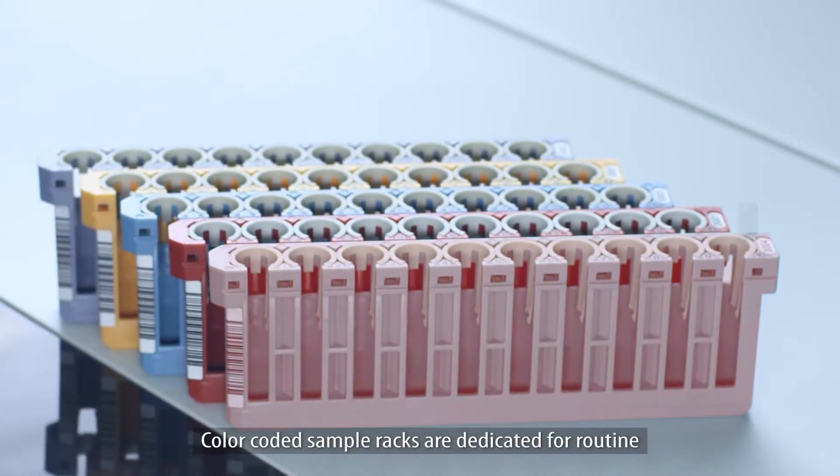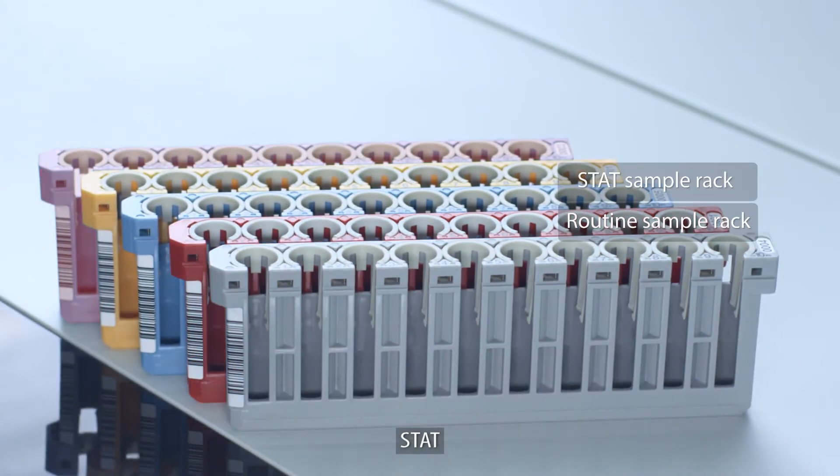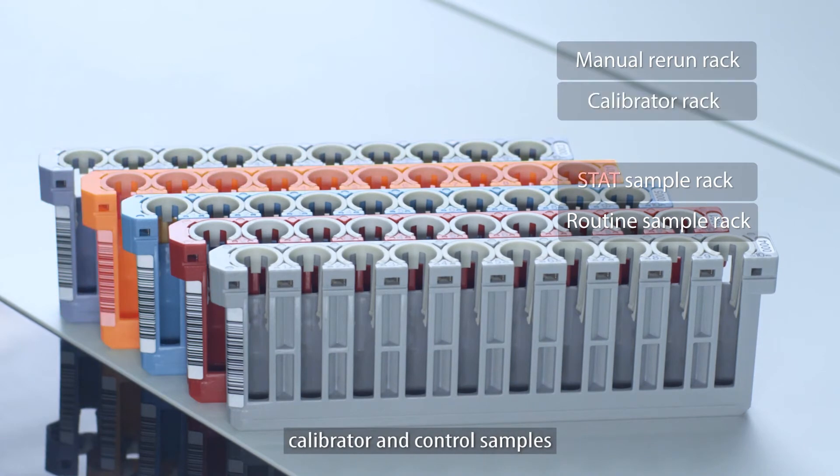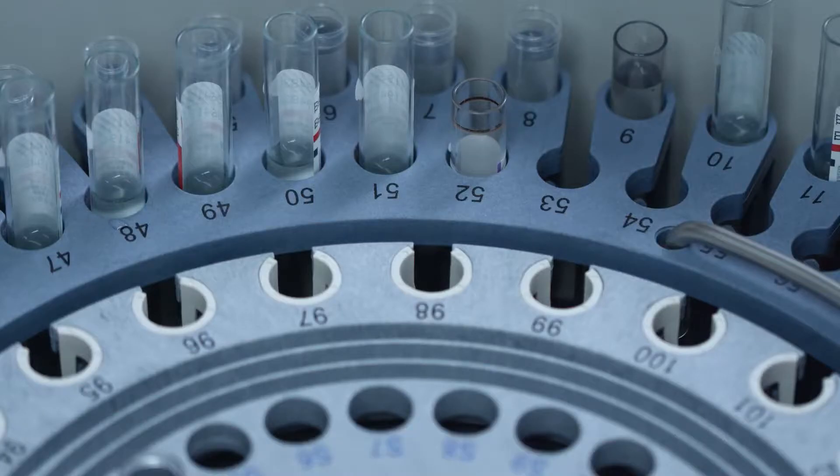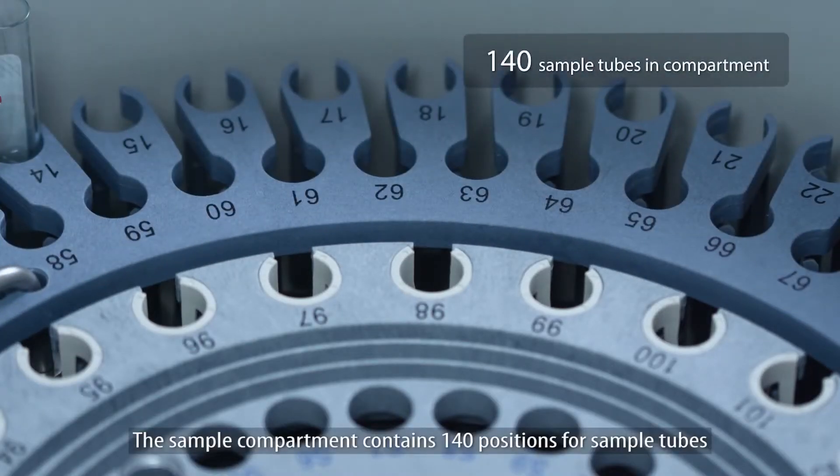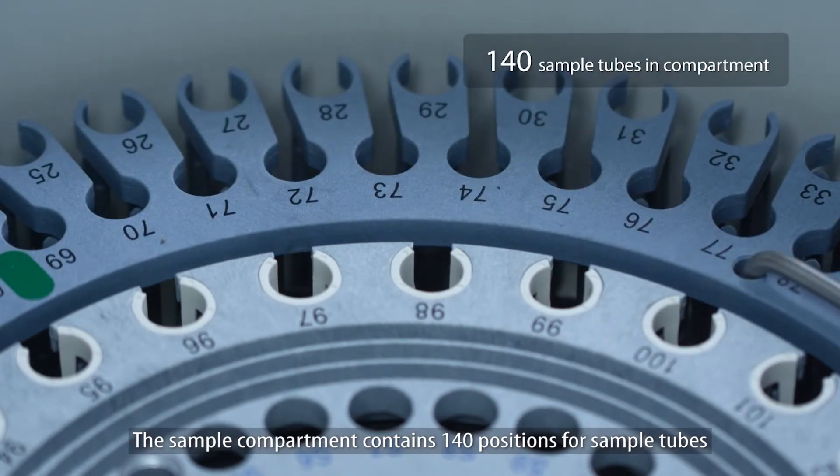Color-coded sample racks are dedicated for routine, stat, rerun, calibrator and control samples. The sample compartment contains 140 positions for sample tubes.